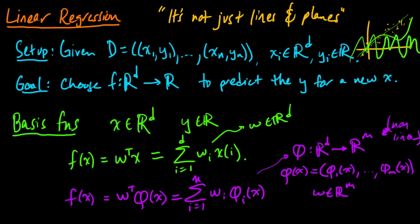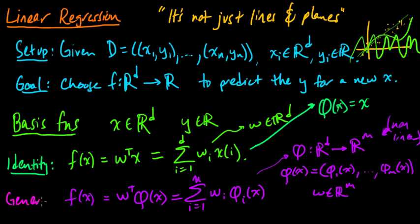Here, this first one we could view as a special case of the second, where phi of X is just X. The coordinate functions are just the coordinates of X. So this is a special case. Let's give these some names. I'm going to call this the identity, the identity function. Phi is the identity. This one I'll just call the general case. From this general case, let me give you some examples of particular other phis that you might use besides the identity.